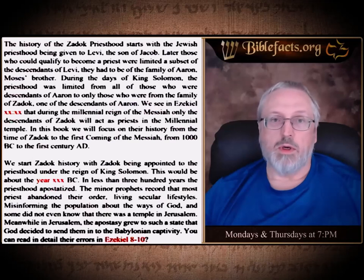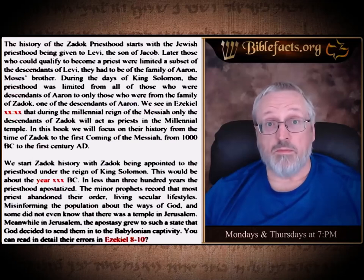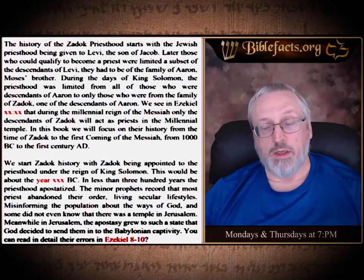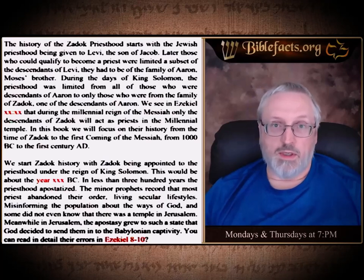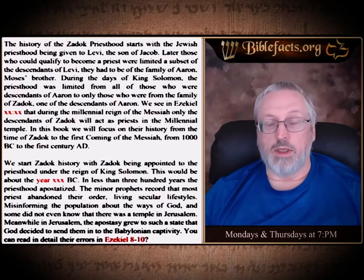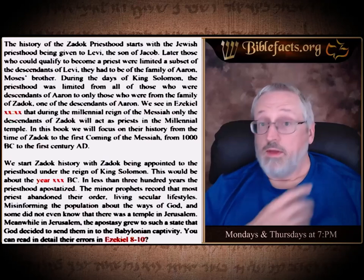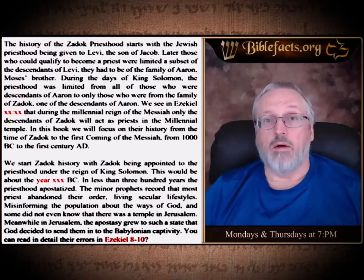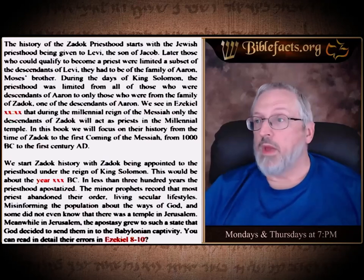Each one of those 500-year periods is 10 Jubilees. As you know from scripture, there are seven Shemitahs and a Jubilee — seven years times seven, plus one year for the Jubilee year itself. We'll get into all of that.